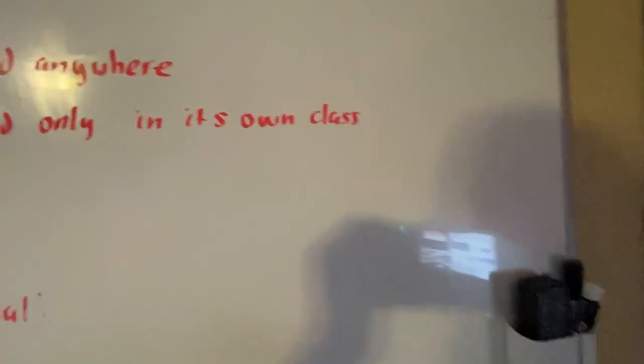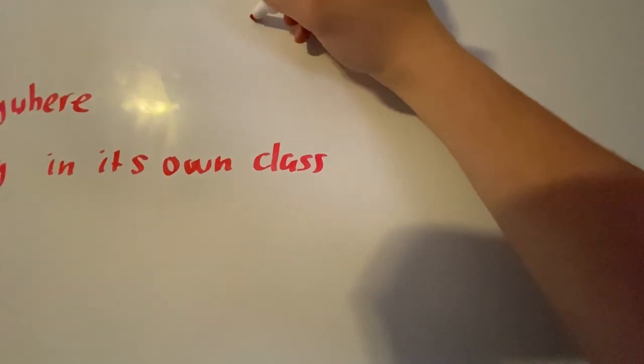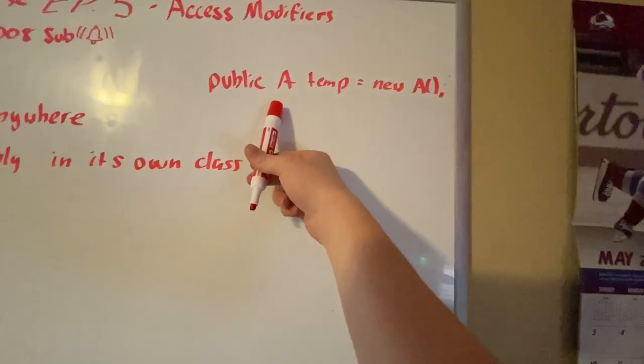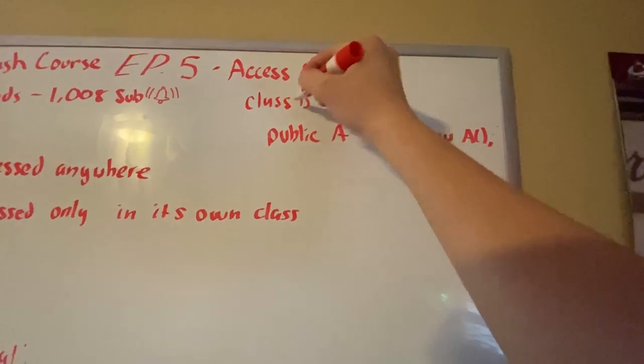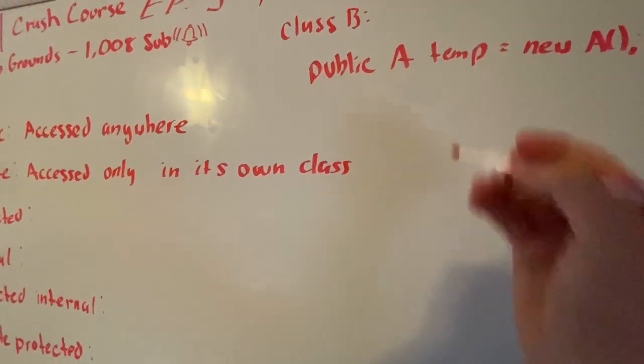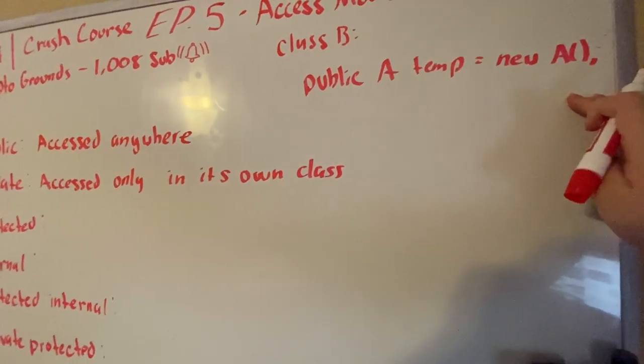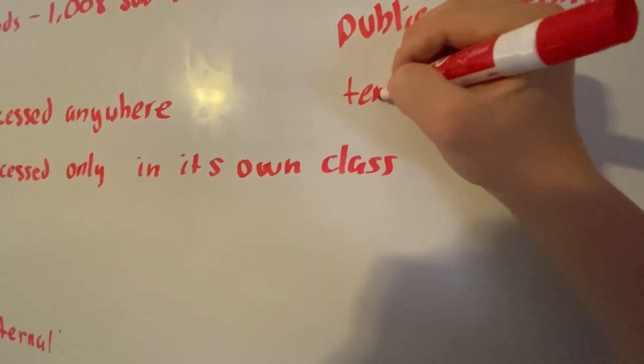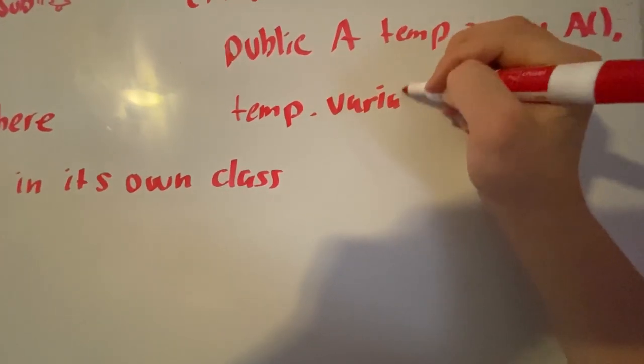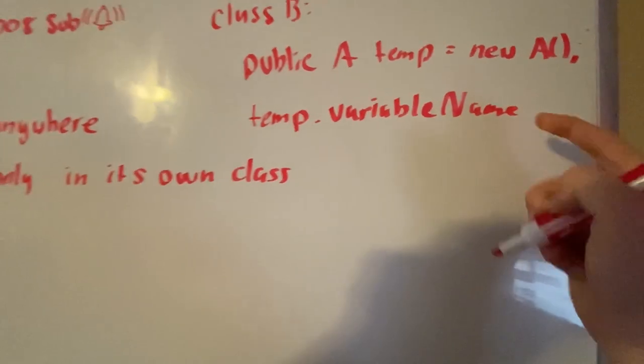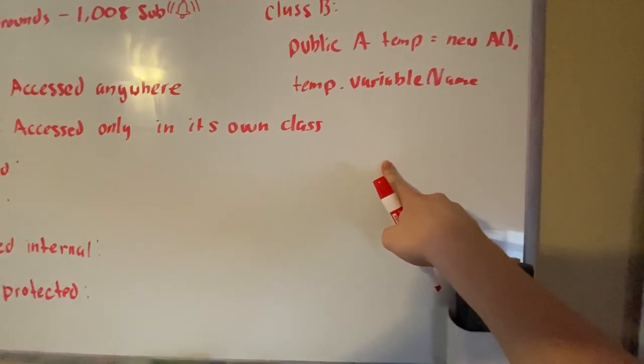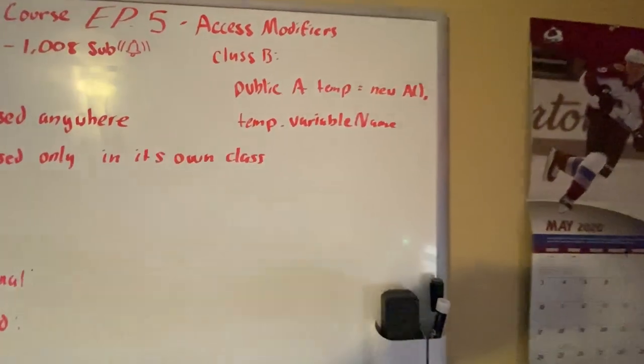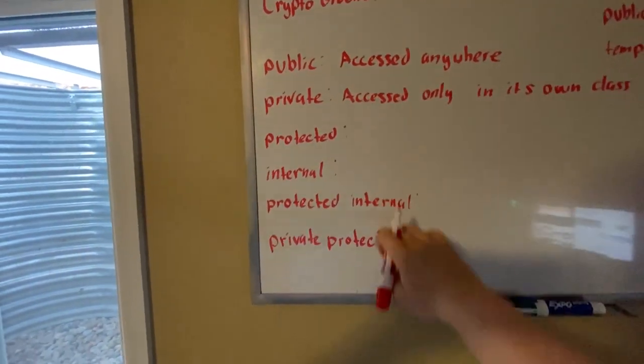Even if you have a class A, for example, let's say class A is the one that has it. If you have public A temp equals new A, and this has a private variable, and we're now in class B, we cannot access any of its private variables even if we make this. If it was public, we could literally just do temp dot the variable name. We could access if it's public, if it was protected, even internal.